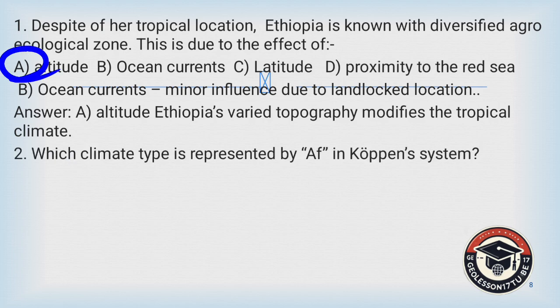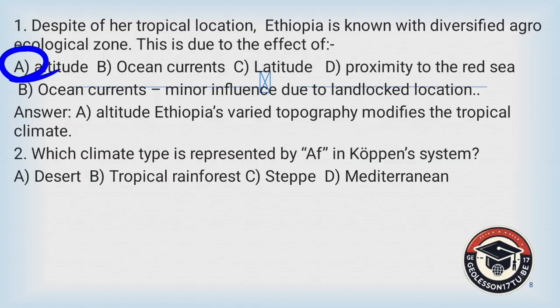Question number two: Which climate type is represented by 'Af' in Koppen's climate classification system? A) desert, B) tropical rainforest, C) steppe, D) Mediterranean.